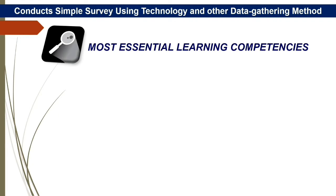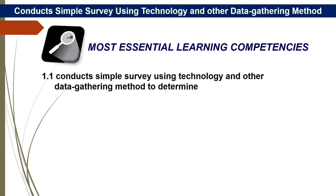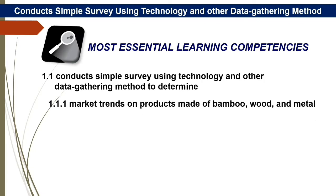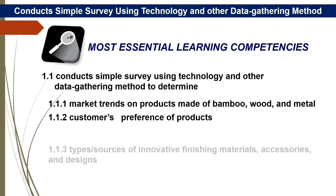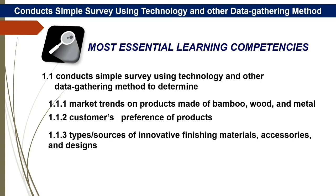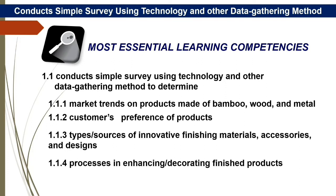Our most essential learning competencies: 1.1 Conduct simple survey using technology and other data gathering method to determine — 1.1.1 market trends on products made of bamboo, wood, and metal; 1.1.2 customers' preference of products; 1.1.3 types/sources of innovative finishing materials, accessories, and designs; 1.1.4 processes in enhancing/decorating finished products; and 2.1.3 types of products.